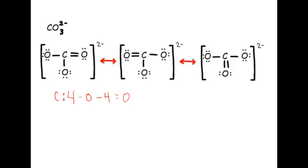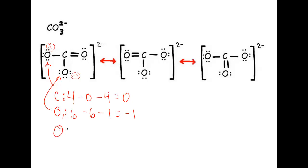There are two types of oxygen in this structure: two oxygens with a single bond and one oxygen with a double bond. For O1, the single-bonded oxygen: oxygen starts off with six valence electrons, it has six dots and one dash, giving it a formal charge of negative one, which I'll write nearby that O in the structure. For the double-bonded oxygen: it starts with six valence electrons, has four dots and two dashes, giving it a formal charge of zero — so we're not going to mark it.